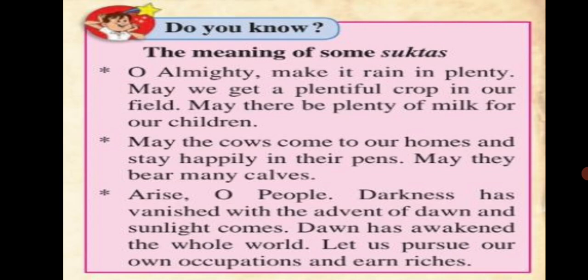Examples of some Suktas include prayers such as: 'O Almighty, make it rain in plenty. May we get a plentiful crop in a field. May there be plenty of milk for our children.' And: 'May the cows come to our homes and stay happily in their pens. May they bear many calves.' And: 'Arise, O people! Darkness has vanished with the advent of dawn and sunlight comes. Let us pursue our own occupations and earn riches.' These are prayers put forth to God through Vedic verses, hymns, and songs.